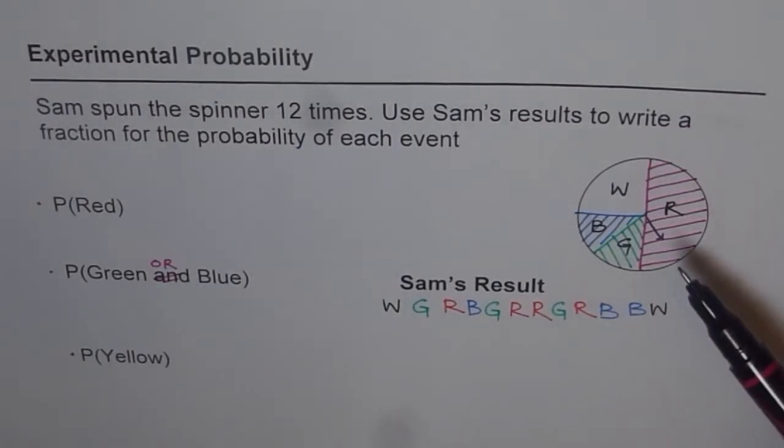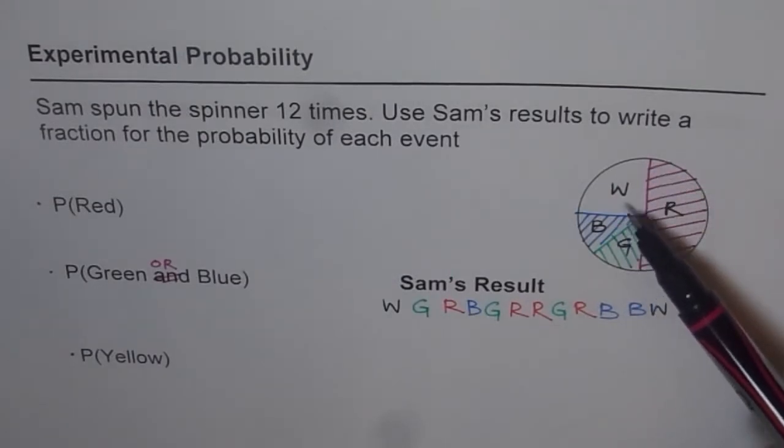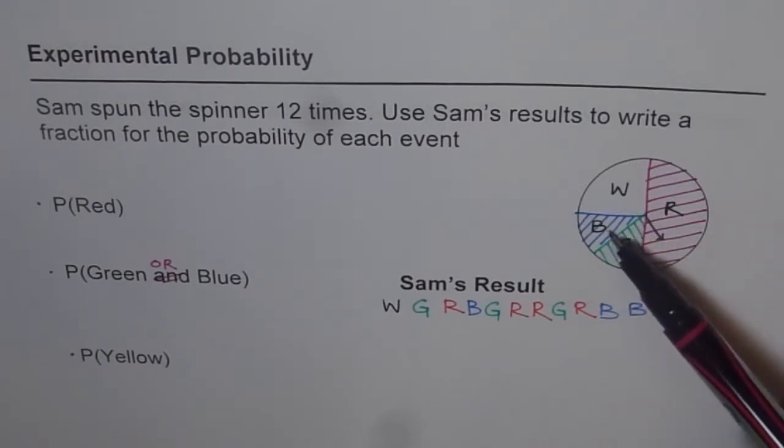And the spinner is shown here on the right side. So we have shown half of it almost as red, quarter as white, and this is one eighth as blue and green.